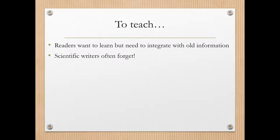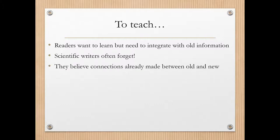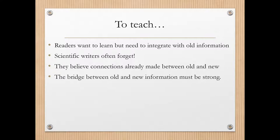Scientific writers often forget this. We tend to be very deeply stuck into the science, and we tend to think that the rest of the population often has the same understanding of things as we do. Scientists often get a bad rap for their communication to the world at large. So we have to always think about who our audience is, and we have to always think about providing that context to link them to the new material. Scientific writers often believe that the connection is already made between the old and the new, and we lose that context. The bridge between old and new information must be strong — it must be front and center. If we don't make that bridge between old and new information, we will lose the reader completely.